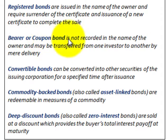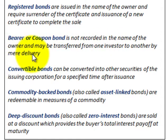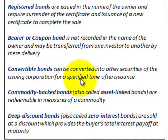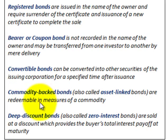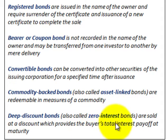Bearer or coupon bonds are not recorded in the name of the owner and may be transferred from one investor to another by mere delivery. Convertible bonds can be converted into other securities of the issuing corporation for a specified time after issuance. Commodity-backed bonds, also called asset-linked bonds, are redeemable in measures of a commodity. Deep discount bonds, also called zero interest bonds, are sold at a discount which provides the buyer total interest payoff at the maturity date.